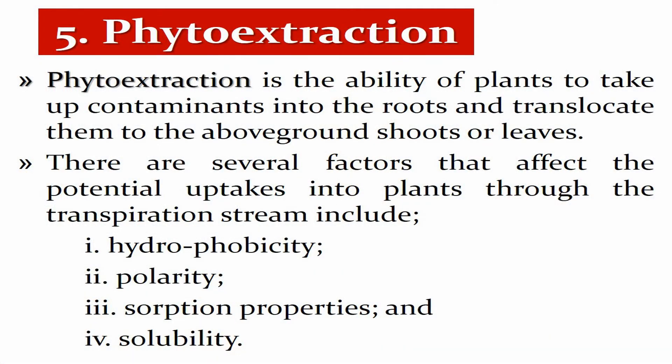The fifth mechanism is phytoextraction, which refers to the ability of a plant to take up contaminants from the soil into the roots and then translocate them from the roots to the stems and leaves. Several factors affect the potential uptake into the plant through the transpiration stream, including hydrophobicity, polarity between the soil and the contaminants, sorption properties, and the solubility of the contaminant in the soil.